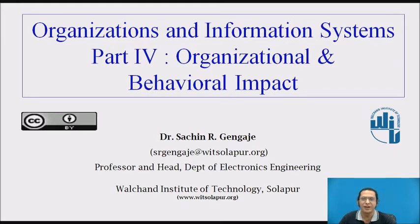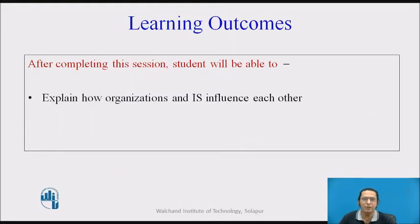In this series, we are discussing about the influence of information system and organization on each other. Today, we are going to discuss how information systems have organizational and behavioral impact on the business firm when that business firm is implementing information systems. The learning outcome of this session: after completing this session, the student will be able to explain how organization and information system influence each other, especially how the behavioral impact of information system on the organization works.